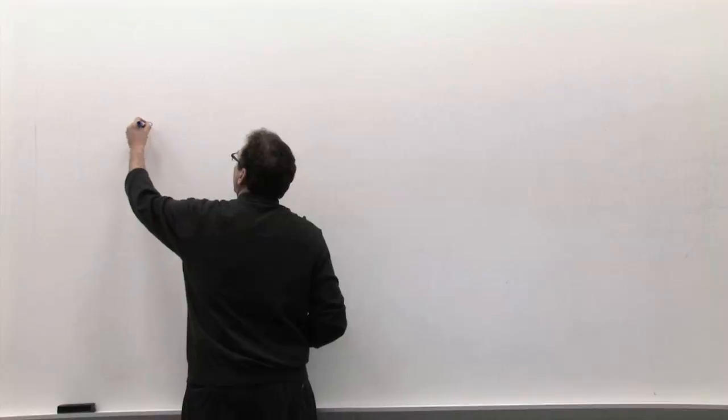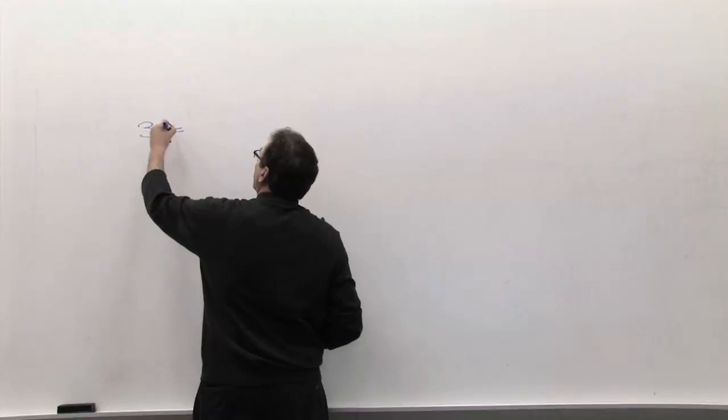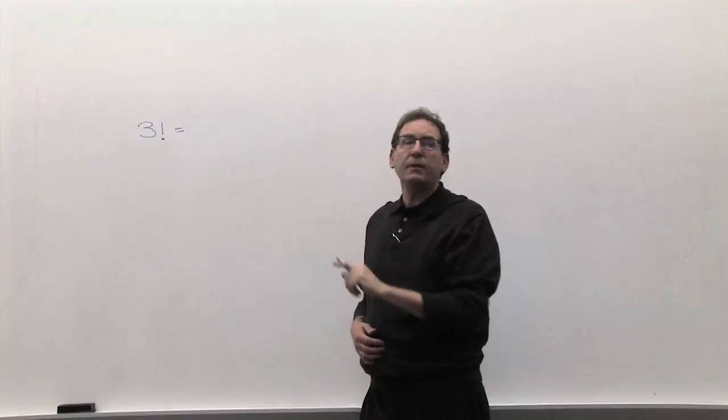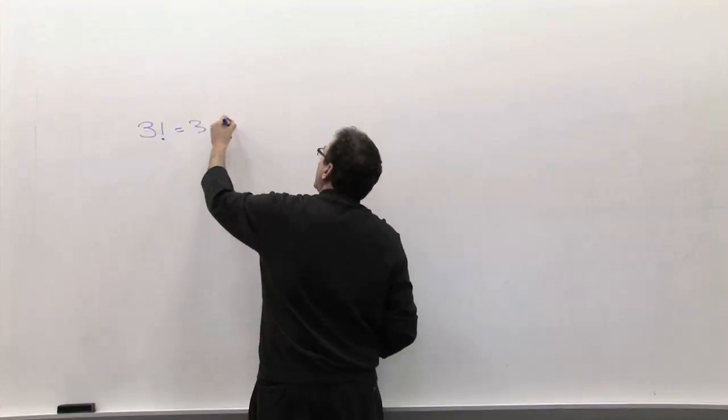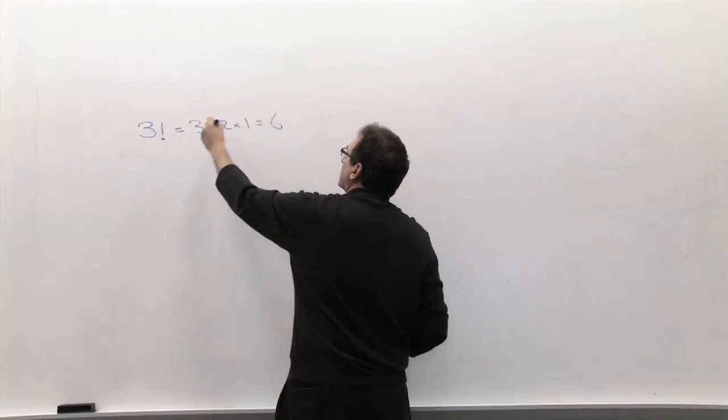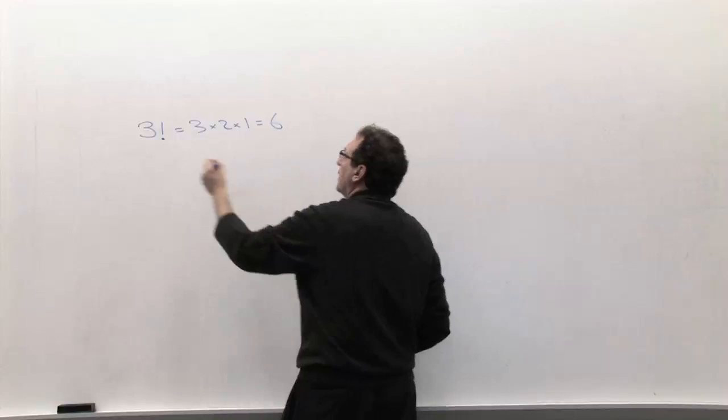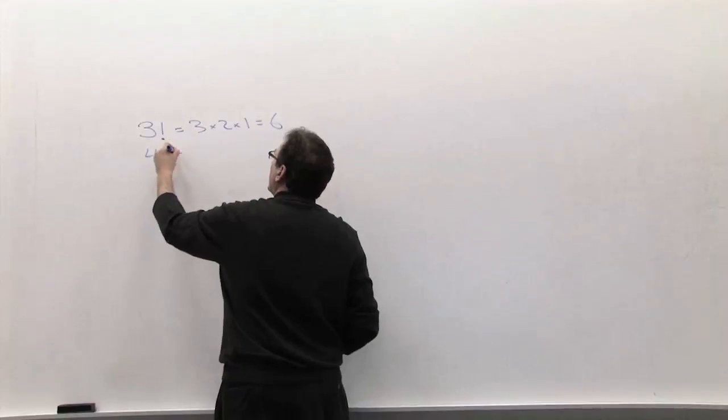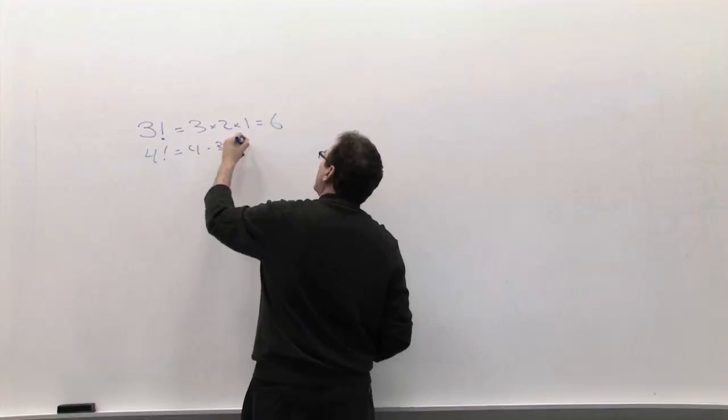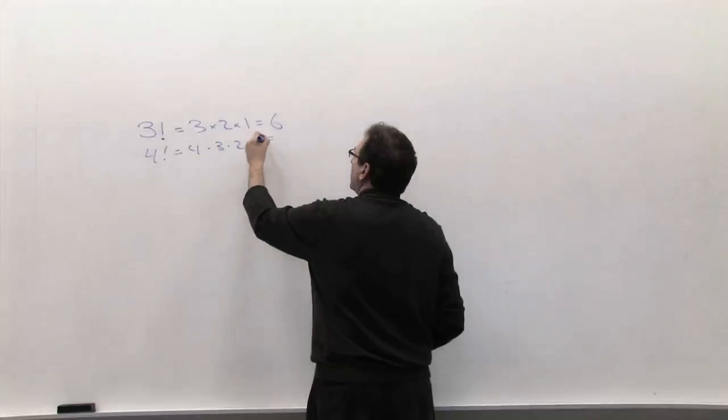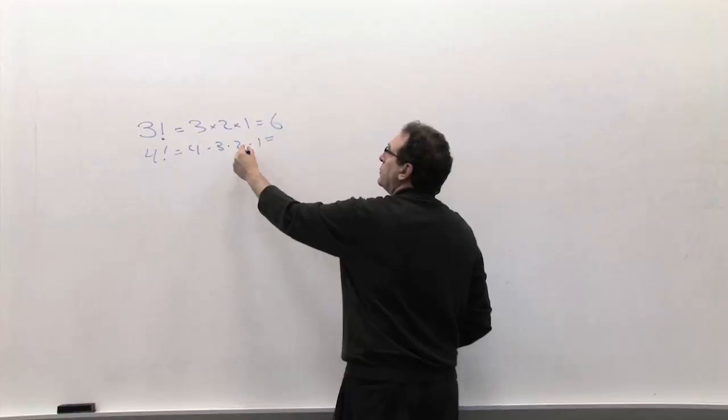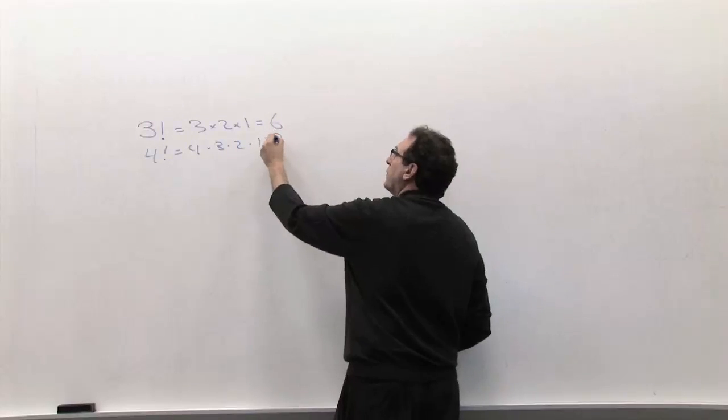So, for example, 3 factorial, which means an exclamation point, but in this particular context it's read factorial, is 3 times 2 times 1, or 6. 3 times 2 is 6, 6 times 1 is 6. 4 factorial will be 4 times 3 times 2 times 1. We use a dot to represent multiplication in mathematics, and that's going to equal 4 times 3 is 12, 12 times 2 is 24, 24 times 1 is 24.